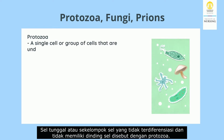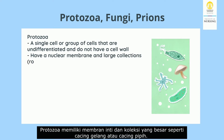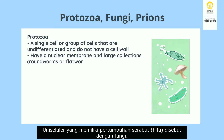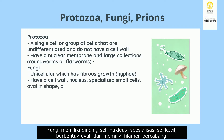A single cell or group of cells that are undifferentiated and do not have a cell wall are called protozoa. Protozoa have a nuclear membrane and large collections such as roundworms or flatworms. Unicellular organisms with fibrous growth are called fungi. Fungi have a cell wall, nucleus, specialized small oval-shaped cells, and branching filaments.